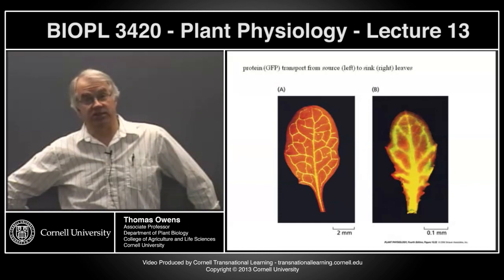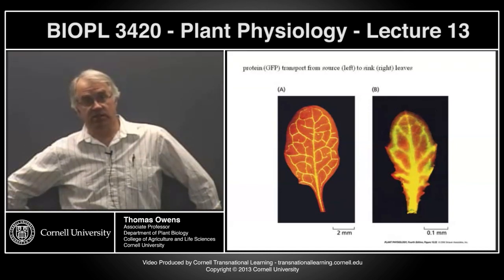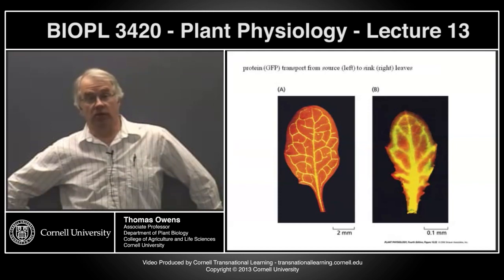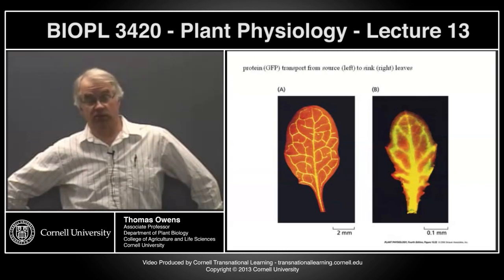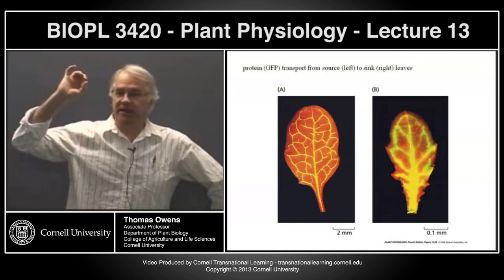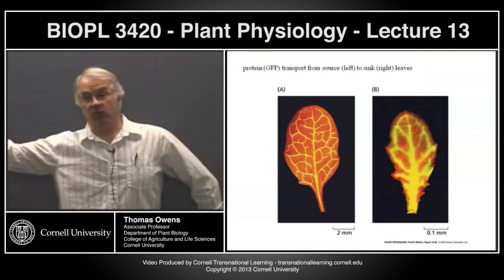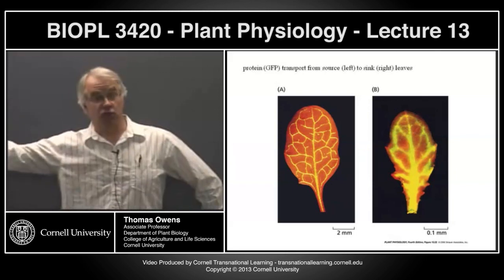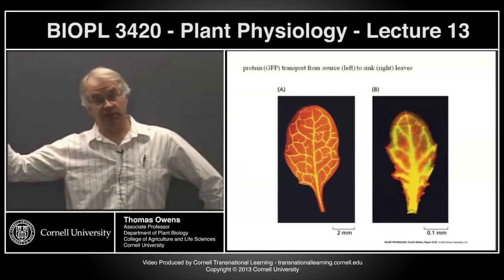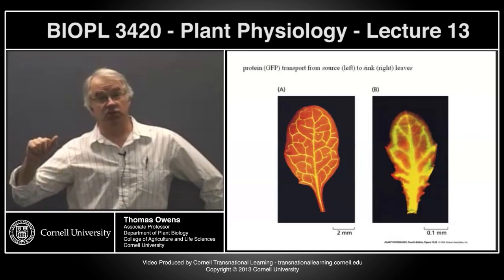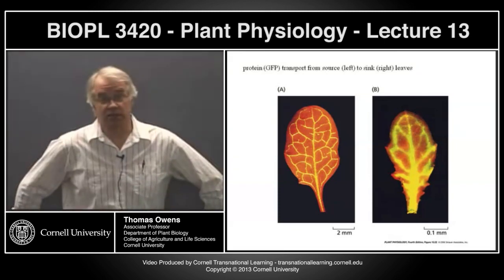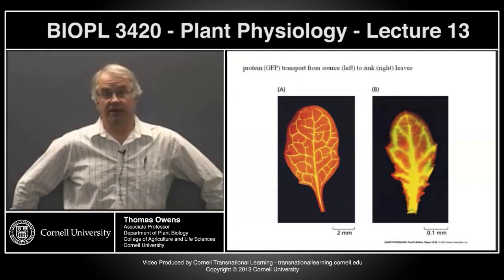The short answer is proteins. The plasmodesmata are lined with proteins, and there are, for example, viral movement proteins that are involved in moving viral genomes through plasmodesmata. The idea of thinking of plasmodesmata as a static tube through which stuff can move symplastically is true for things smaller than the size exclusion limit. But for things larger than the size exclusion limit, there have to be other mechanisms, and we're just starting to sort out what some of those mechanisms are.